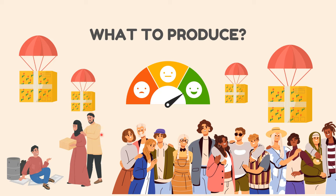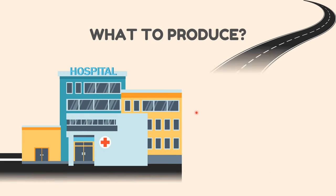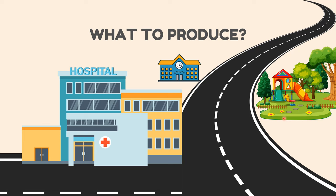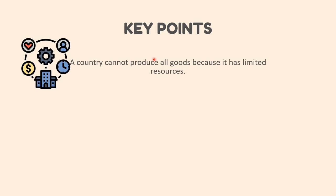Production has to be done in a way that maximum satisfaction is achieved by society by looking into what is more important. For example, the construction of a hospital can be done by giving up a highway; a public park or a school can be built on the same land. One has to decide what needs to be built by studying which is the more important need of the area. Goods are of different categories — consumer goods, capital goods, and civil or war goods — and keeping in mind the requirement of each, their quantity is decided.